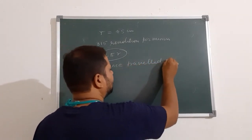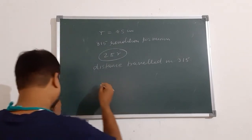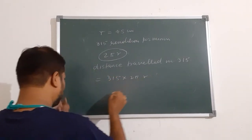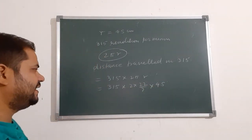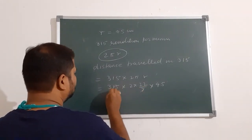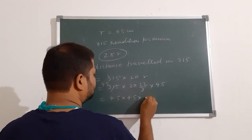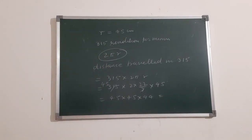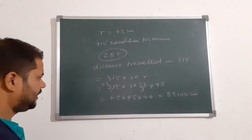So one revolution is 2πr, the circumference of a circle. So distance traveled in 350 revolutions is 350 × 2πr. So 350 × 2 × 22/7 × 45. This is the radius. So 7 goes into 28 times, 45 × 28 × 22. This will be nothing but 89100 cm.